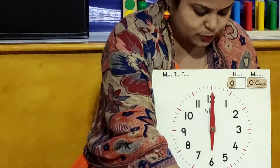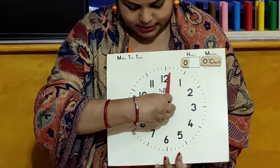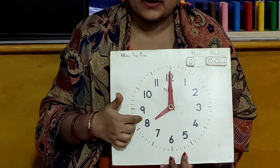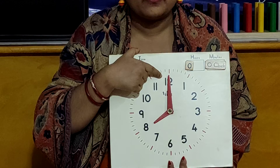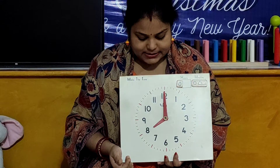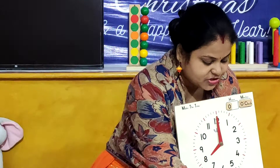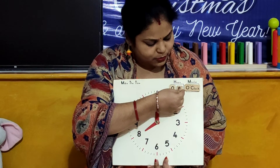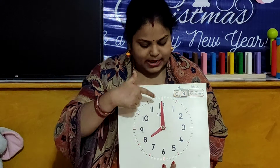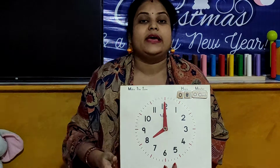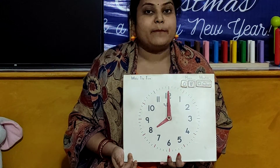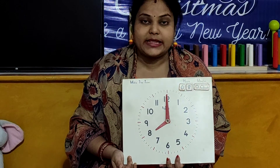So children, again I will ask you a question. Now our hour hand is on number 8 and minute hand is on number 12. So what's the time? It's time 8 o'clock. Yes children, it's time 8 o'clock. The hour hand is on number 8 and minute hand is on number 12. It's time 8 o'clock.